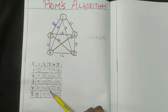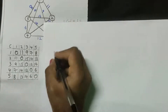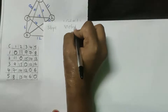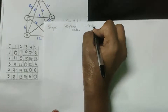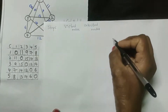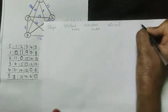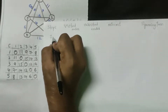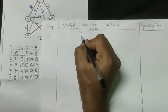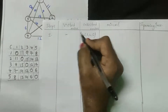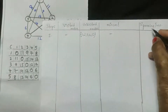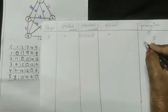Now all the cost matrix table values are filled. Let us start solving Prim's algorithm. We need to write four columns: steps, visited nodes, unvisited nodes, minimum cost, and spanning tree. The spanning tree initially shows one, two, three, four, and five, drawn according to the graph.